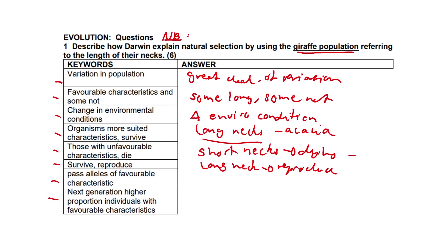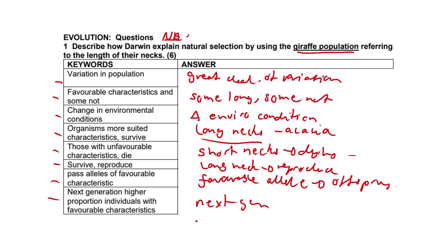Those that survive reproduce and pass on the alleles of favorable characteristics — the favorable alleles of long necks are passed to the offspring. Therefore the next generation will have a higher proportion of individuals with long necks. This is largely due to those with shorter necks dying out, being unable to survive or reproduce, while those with longer necks survive, reproduce, and pass on favorable alleles. Please learn this section — it is very likely to come out in the exam.